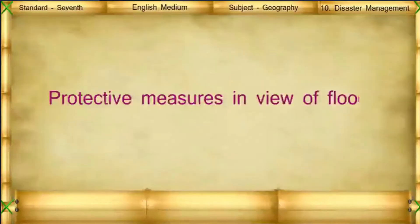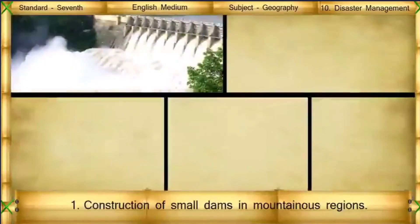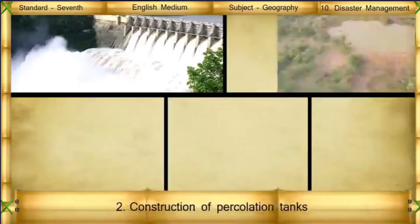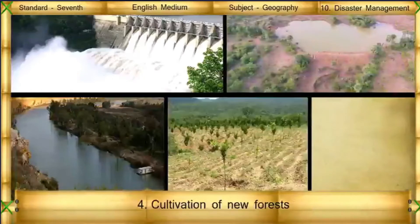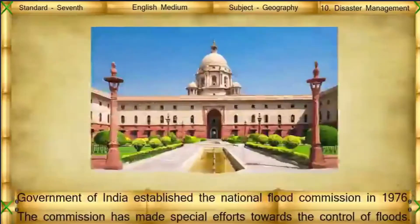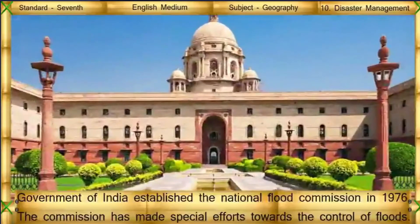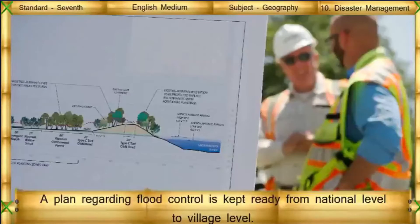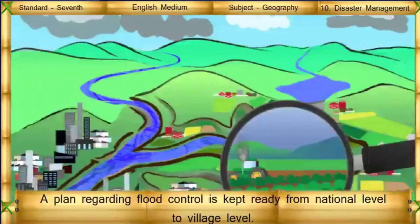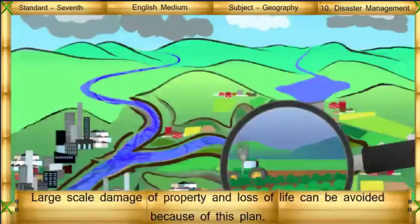Protective measures in view of floods: Construction of small dams in mountain regions. Construction of percolation tanks. Making riverbeds flat. Cultivation of new forests. Connecting rivers. The Government of India established a National Flood Commission in 1976. The commission has made special efforts towards flood control. A plan regarding flood control is kept ready from national level to village level, helping to avoid large-scale damage to property and loss of life.